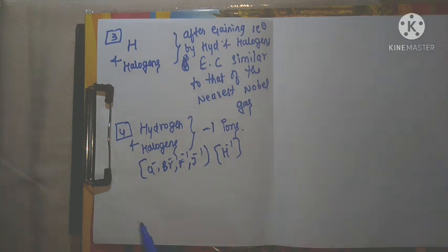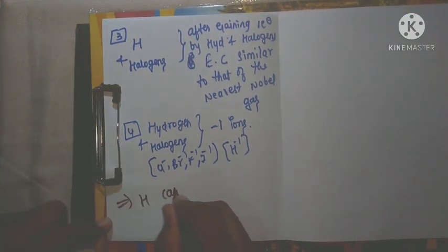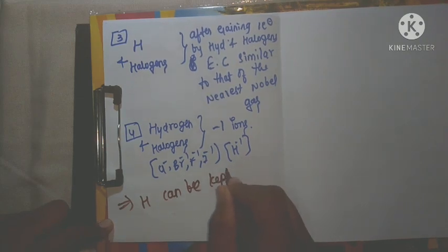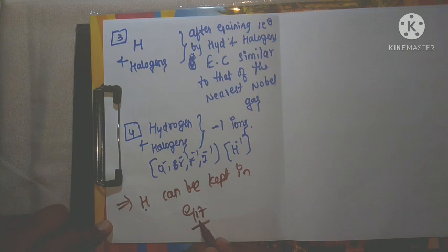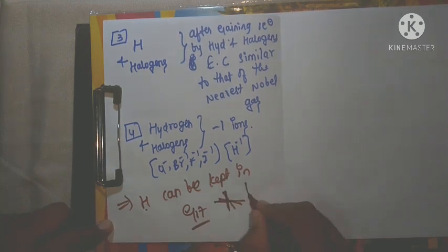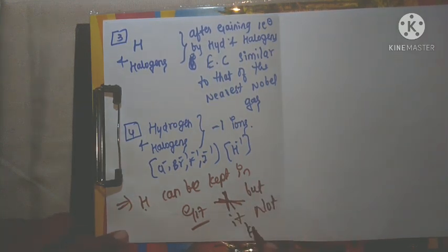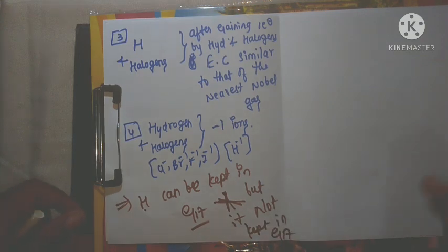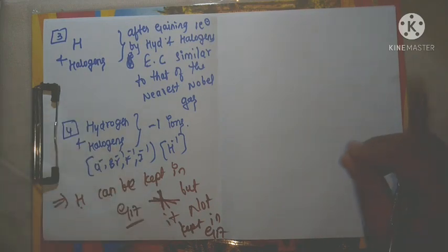After studying these similarities, one might think hydrogen can be kept in the 17th group. But hydrogen also shows different properties with the 17th group. We will now discuss the different properties between hydrogen and the halogens.